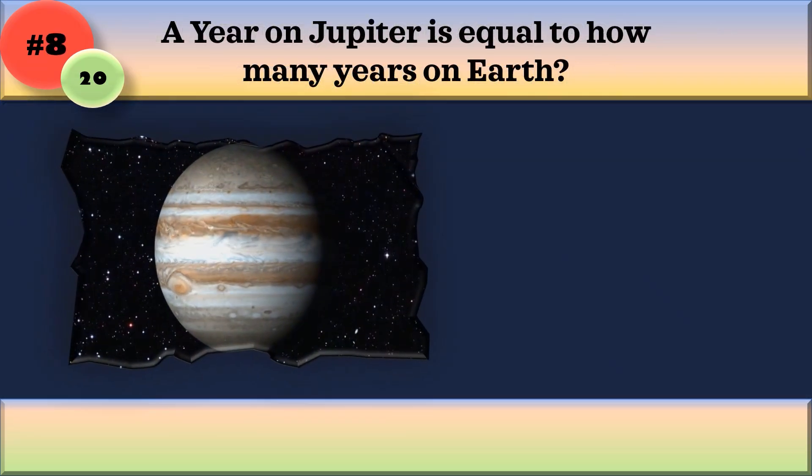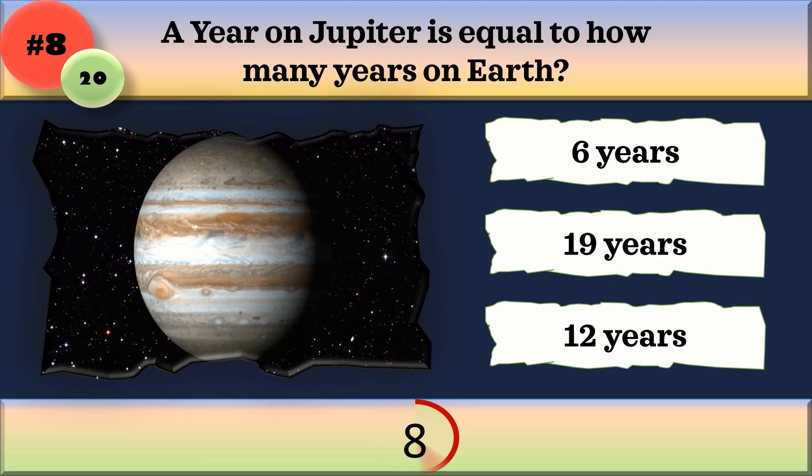A year on Jupiter is equal to how many years on Earth? 6 years, 19 years, or 12 years? It's 12 years.